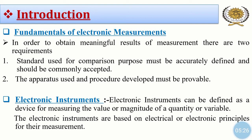Now for measurement of quantities we require instruments. So we see here electronic instruments. Electronic instruments can be defined as a device for measuring the value or magnitude of a quantity or variable. The electronic instruments are based on electrical or electronic principles for their measurement.